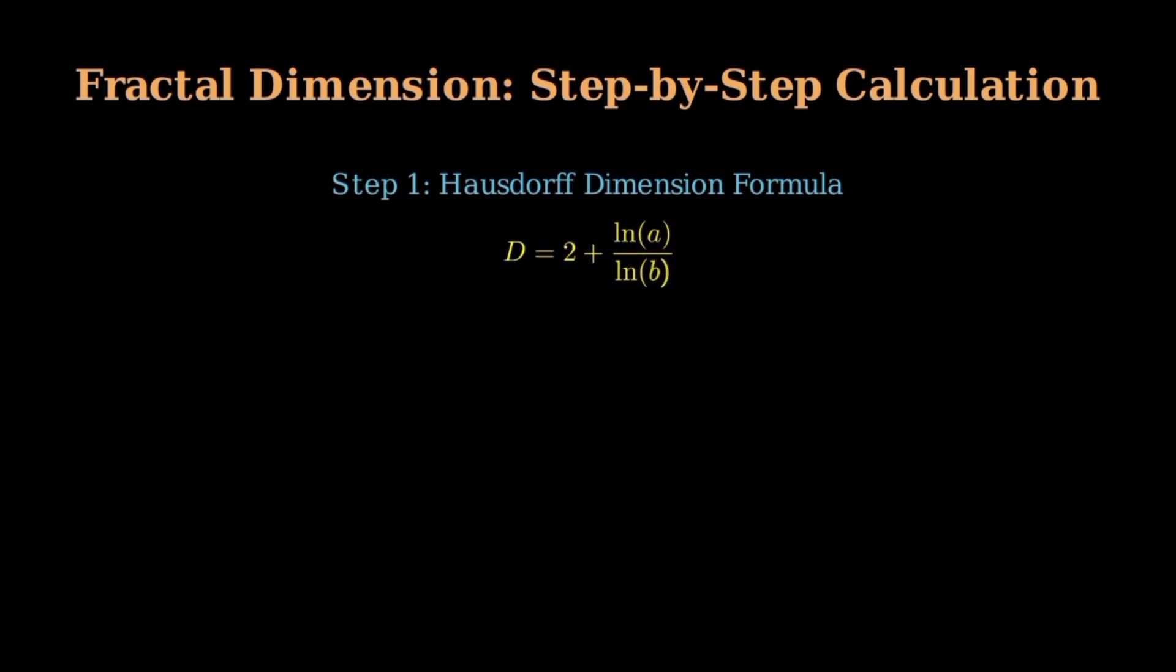The Weierstrass function has a fractal dimension that lies between 1 and 2, measuring exactly how rough the function is. Let's calculate this step by step. The Hausdorff dimension formula is d equals 2 plus the natural logarithm of a divided by the natural logarithm of b.